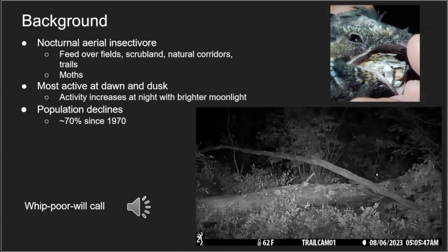The reason we're focusing on Whippoorwills is that their populations have declined significantly throughout their range — 70% since the 1970s. This is very much on theme with losing three billion birds and is a strong example of that trend. The primary reason is habitat loss, and also the loss of food, since they are insectivores that eat bugs.